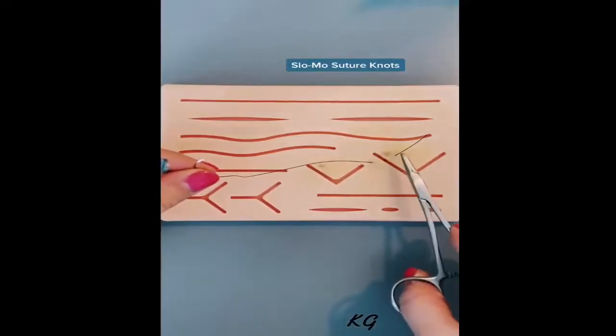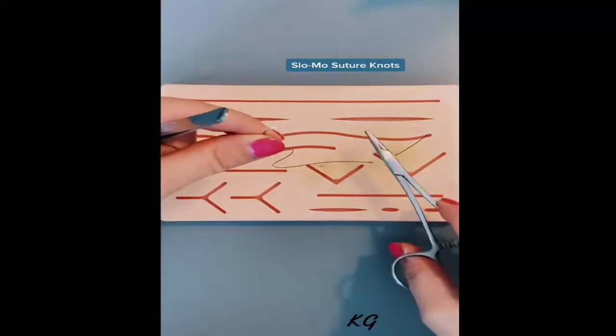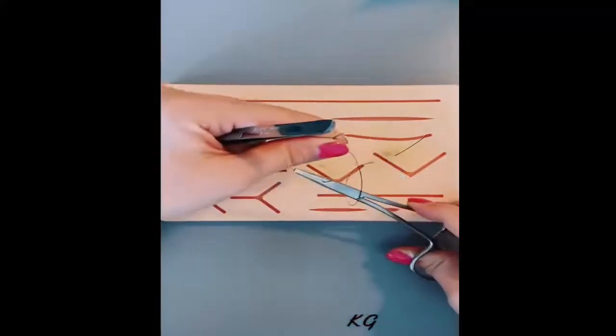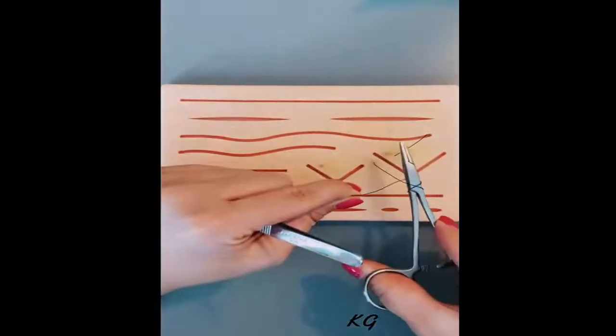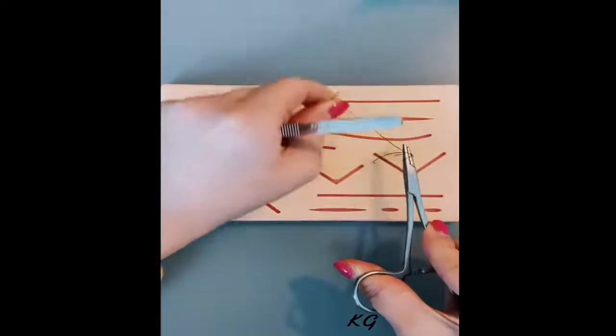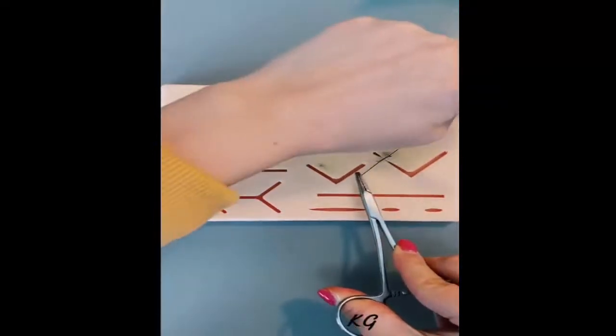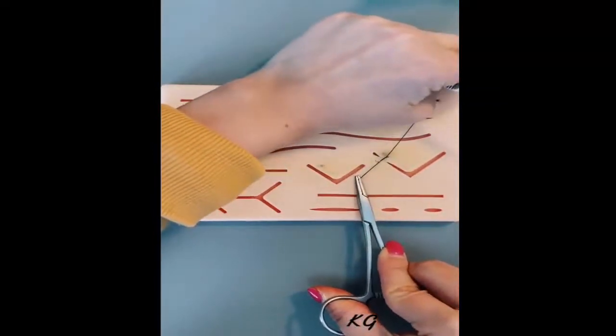How to tie your suture knots, slow-mo edition. You grab your suture, make two loops in the same direction over your needle driver, grab that suture tail, cross your hands, lay it down flat. That's going to bring the skin edges together.